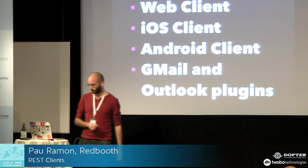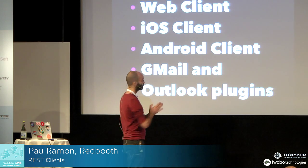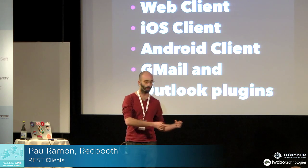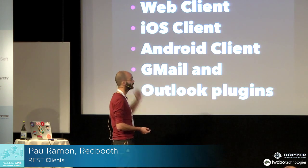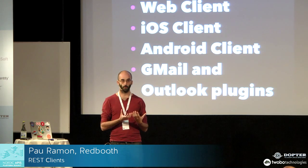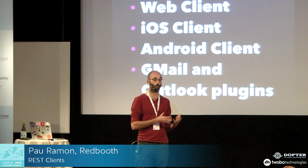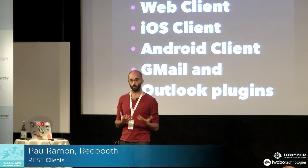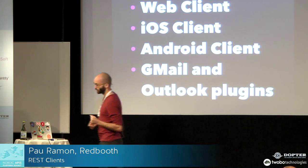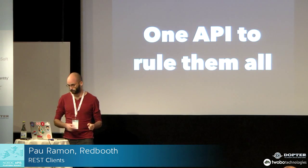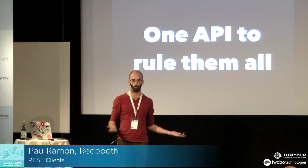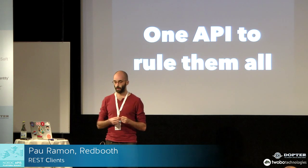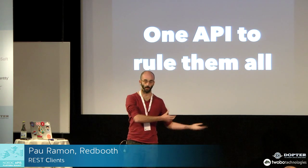So why am I talking about clients? Because our main product is delivered in the form of a client — it's a web client. We also have an iOS client, an Android client, Gmail and Outlook client. So we have plenty of places where you can consume your data, your tasks, your chats. And our early decision was obviously to have one API to rule them all — just one API that can be used by all these clients to access the same data in a unified way.